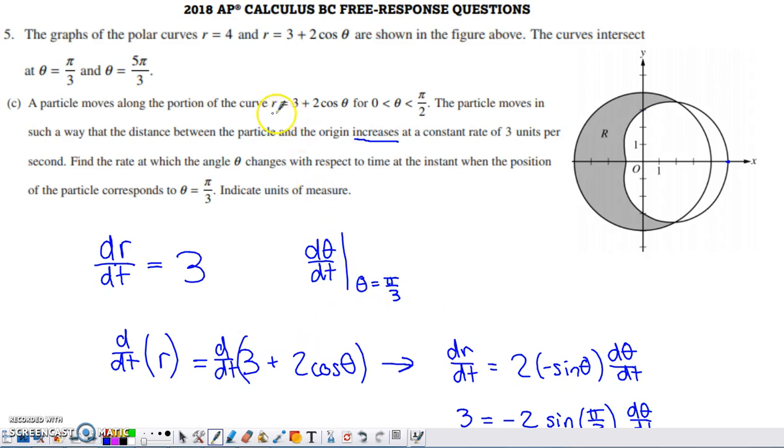They ask us to find the rate at which the angle theta changes, with respect to time, at the instant when the position is at theta equals π/3. They ask us to indicate units of measure. I'm looking for dθ/dt evaluated when theta equals π/3. I've got the relationship between r and theta established. I want to generate dr/dt and dθ/dt. I'm going to take the derivative of both sides with respect to t. That gives dr/dt on the left. On the right, the derivative of 3 with respect to t is 0. I copy the 2. The derivative of cosine theta is negative sine theta. Because theta changes over time, I use implicit differentiation with a chain rule, multiply by the derivative of theta with respect to t.